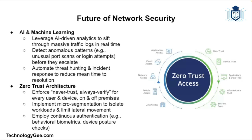Let's move on and talk about the future of network security. As technology continues to evolve, so do the threats and challenges associated with network security. Here are some trends and developments shaping the future of network security. The first is artificial intelligence and machine learning — AI and machine learning are increasingly being used to enhance network security. These technologies can analyze vast amounts of data to detect anomalies, predict threats, and automate responses.